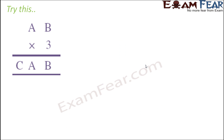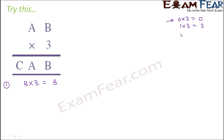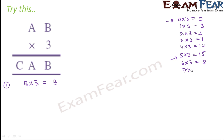Let us try this problem: ab × 3 = cab. The first step is to focus on the units place: b×3 should give a result whose units digit is b. Going through the digits, this is satisfied by 0, and also by 5, because 5×3=15 whose units digit is 5 again. So 0 and 5 are the only two possibilities for b.